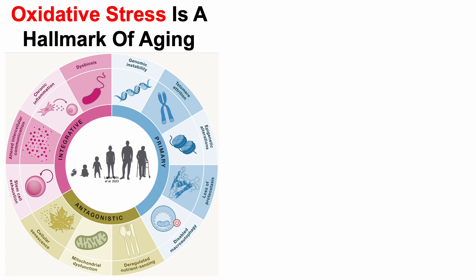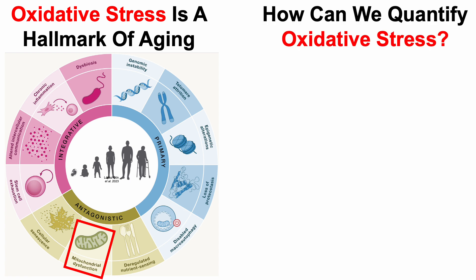Oxidative stress is a hallmark of aging — more specifically, it's found within the mitochondrial dysfunction hallmark. So with that in mind, how can we quantify oxidative stress?